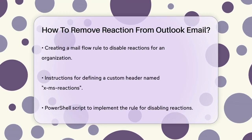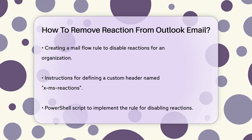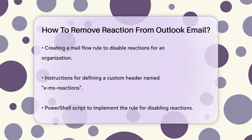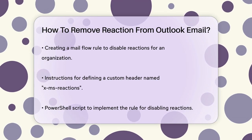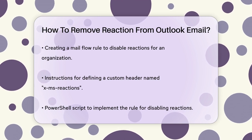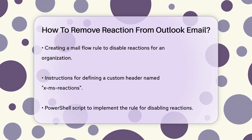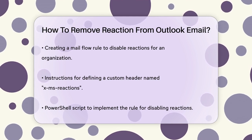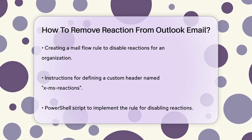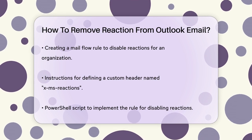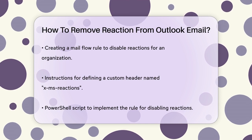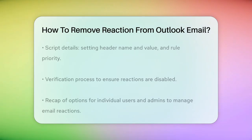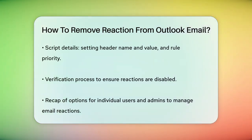To do this, you need to define a custom header named X-MS-Reactions with the value Disallow. You can achieve this by running a PowerShell script with the custom header name X-MS-Reactions, custom header value Disallow, rule priority, and new transport rule named Disable Reactions. Set the header name, custom header name, set header value, custom header value, and priority. This script creates a new transport rule that will apply to all emails, ensuring reactions are disabled across the board.